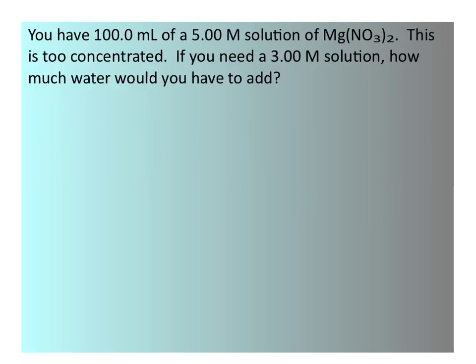In the next example, we have 100 milliliters of a 5 molar solution of magnesium nitrate. This is too concentrated. We need a 3 molar solution. How much water would you have to add? Again, we know we need to use this equation because we have an existing solution, and we're talking about diluting it down by adding water to make it a 3 molar solution.